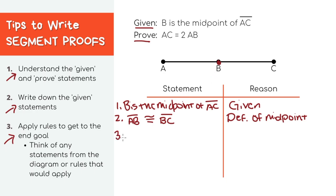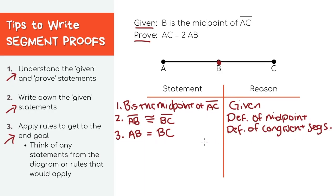So we can say that because AB is congruent to BC, that means that the length of AB is equal to the length of BC. It seems like an easy step, but it's also easy to miss. For the reason, this is just the definition of congruent segments.